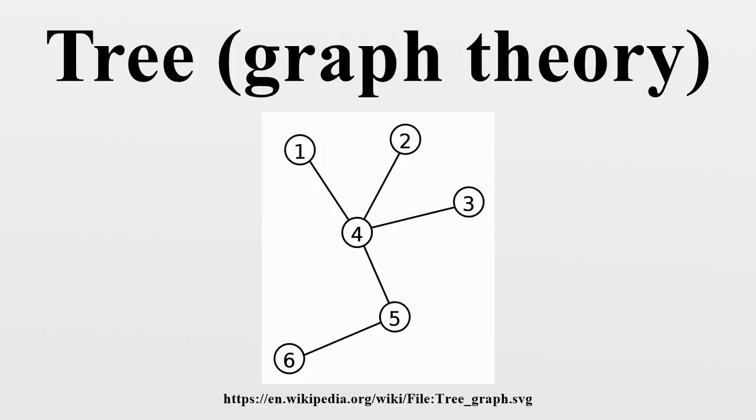The term hedge sometimes refers to an ordered sequence of trees. A polytree is a directed acyclic graph whose underlying undirected graph is a tree. In other words, if we replace its directed arcs with undirected edges, we obtain an undirected graph that is both connected and acyclic.